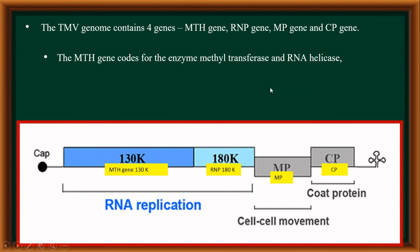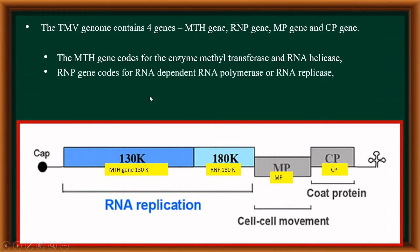The second gene is the RNP gene. This gene codes for the enzyme RNA-dependent RNA polymerase, also called RNA replicase. It is useful for making copies of RNA.